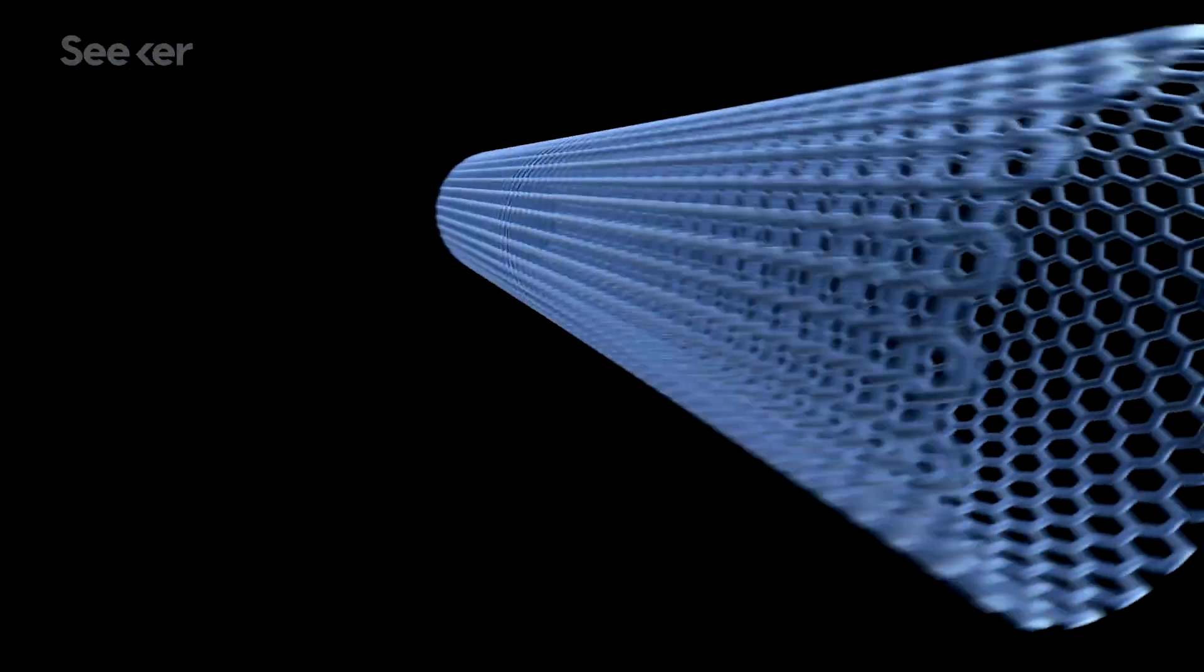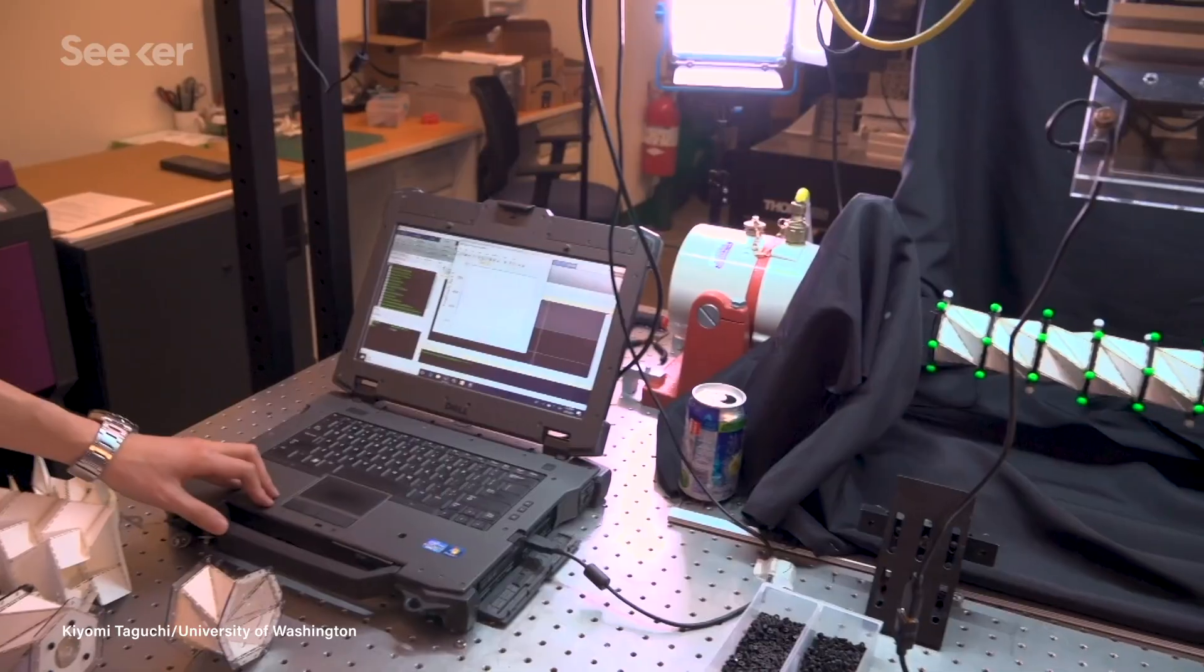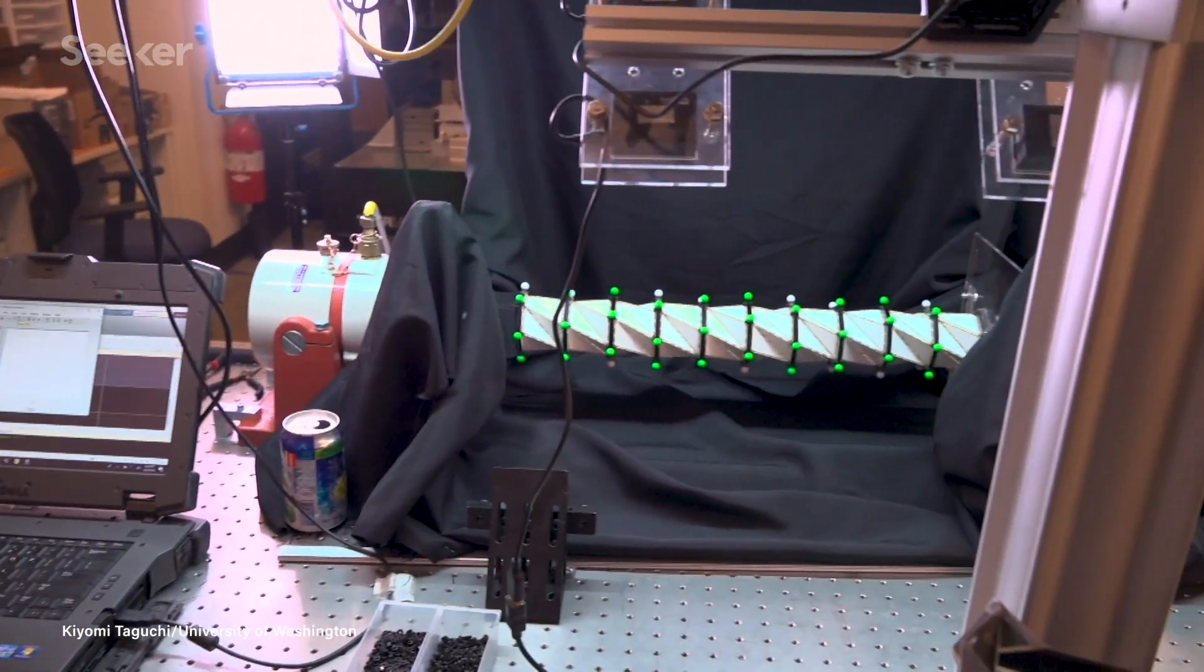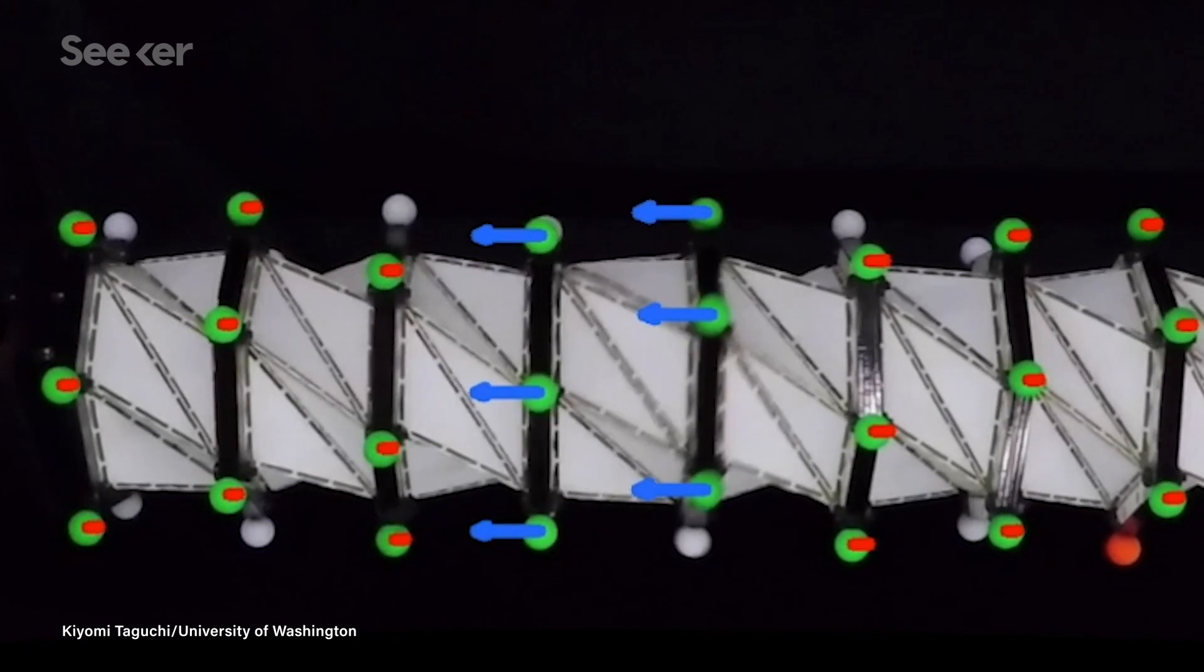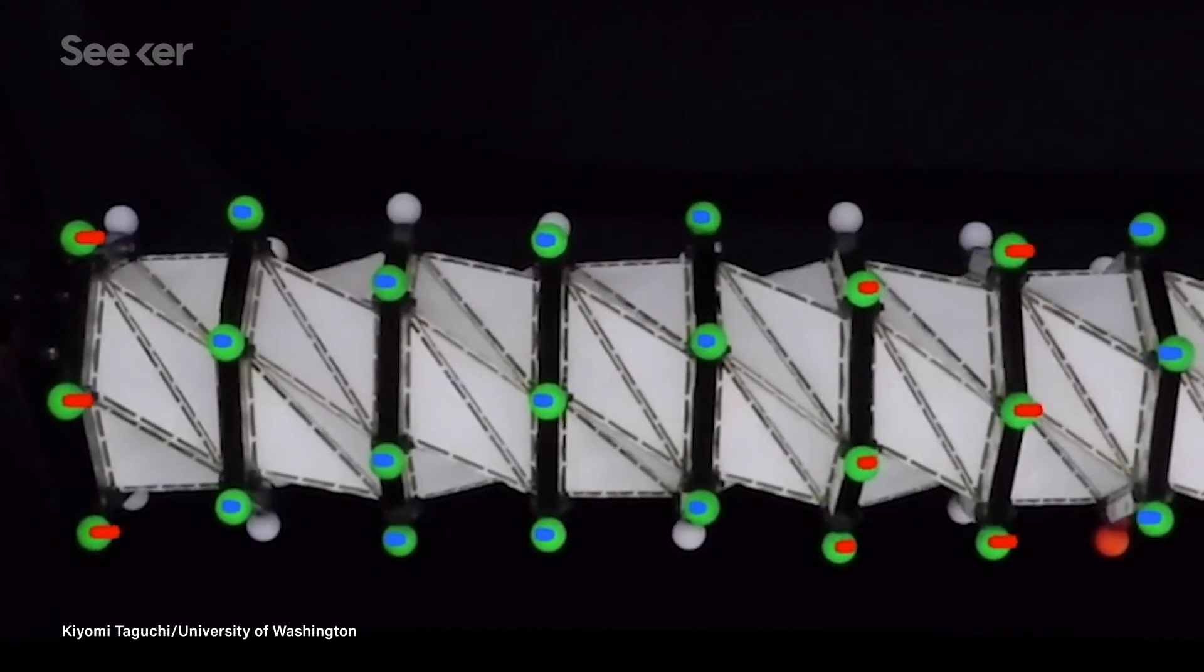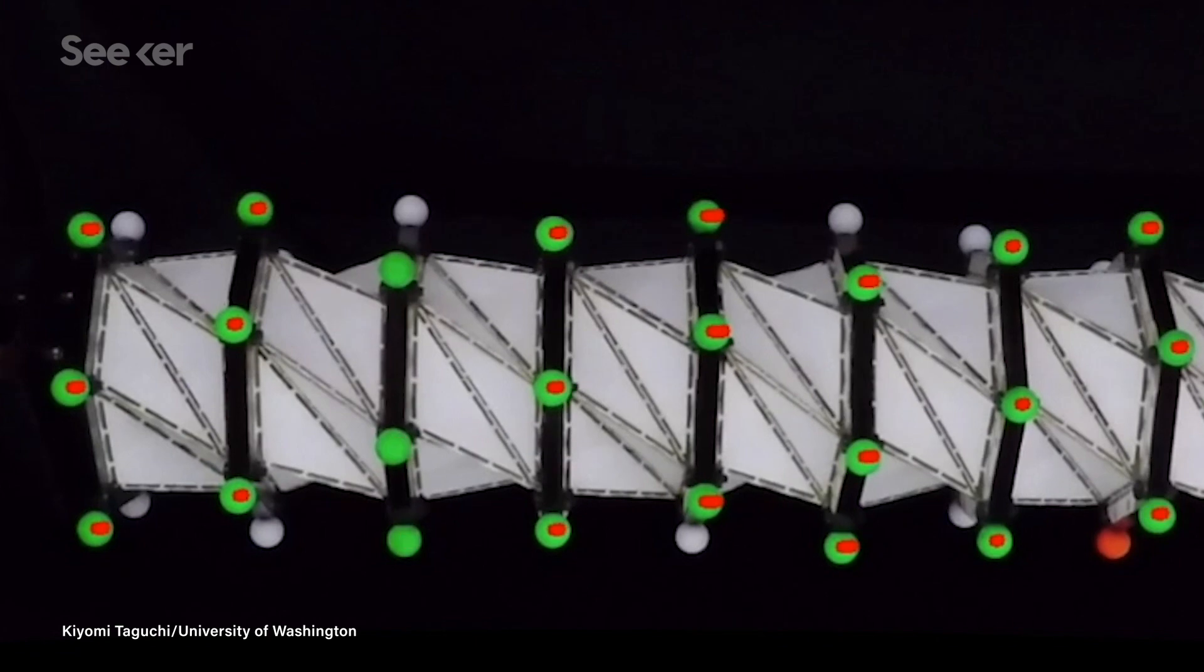Unlike other metamaterials, which typically tend to harden under compression, this structure exhibits strain-softening behavior. This essentially means that the engineers found a way to turn a compression wave, that is, a push or heavy impact, into a tension wave, that is, a pull.